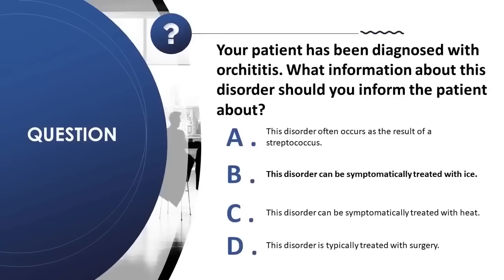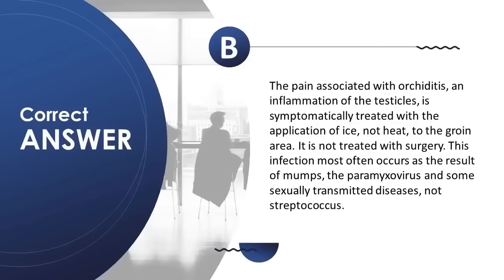Question 24: Your patient has been diagnosed with orchitis. What should you inform the patient? A) often occurs as the result of streptococcus; B) can be symptomatically treated with ice; C) treated with heat; D) typically treated with surgery. Correct answer is B. The pain of orchitis, an inflammation of the testicles, is treated with application of ice, not heat, to the groin area. It is not treated with surgery. This infection most often results from mumps, the paramyxovirus, and some sexually transmitted diseases, not streptococcus.